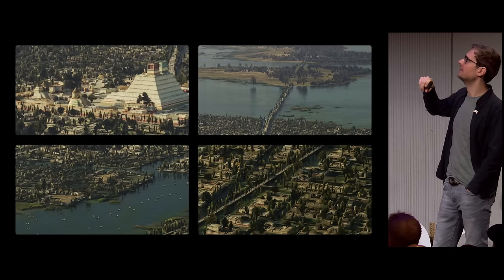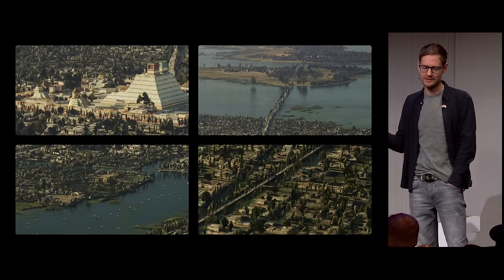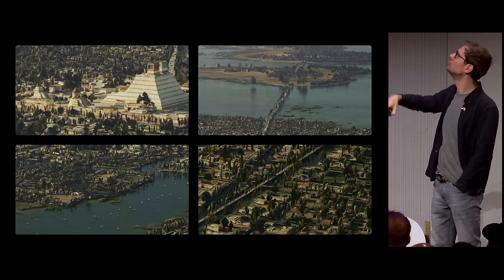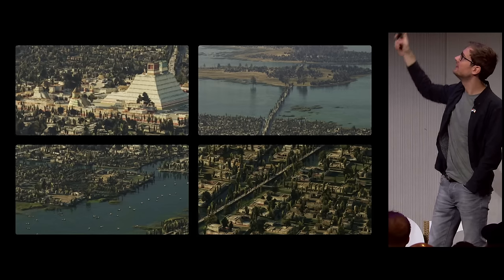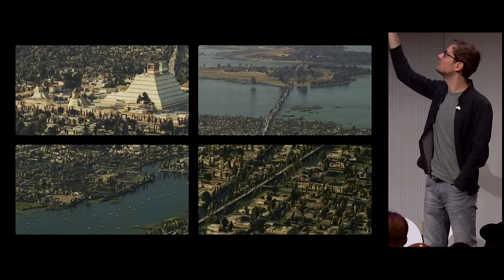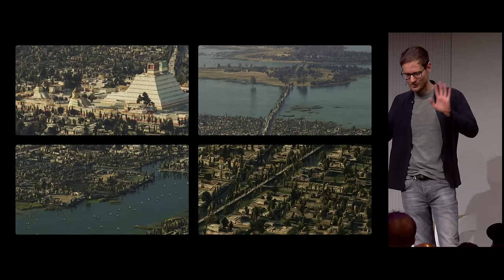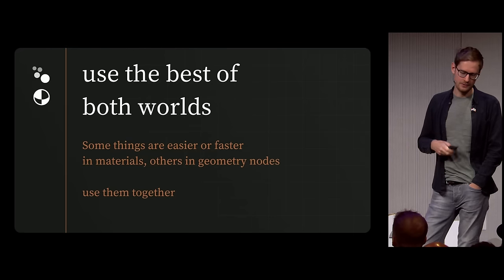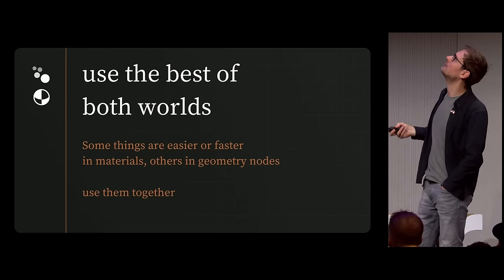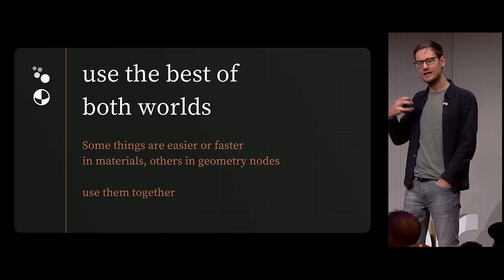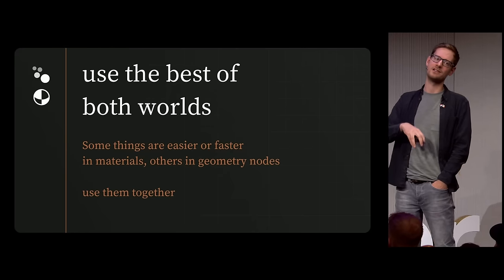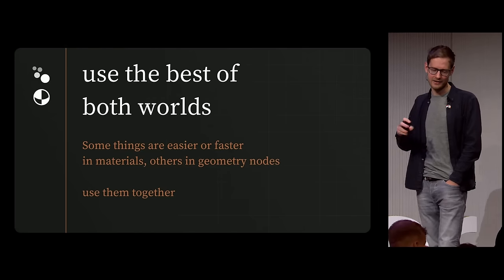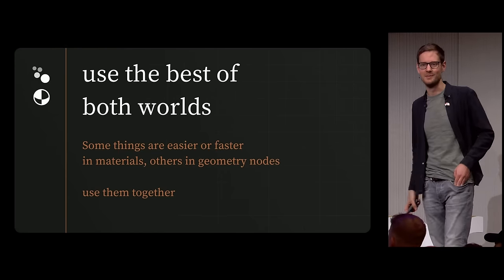Everywhere you look, there's some sort of combination between geometry nodes and materials — the built world, the natural world, canoes, trees, reeds, religious architecture in the top left — everything working together. So the third main takeaway: use the best of both worlds. Some things are more easily calculated in geometry nodes; some things are easier to work out in materials. Use them both. And once you're tired of one, just pass the parameters into the material and continue.